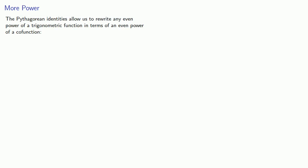The Pythagorean identities allow us to rewrite any even power of a trigonometric function in terms of an even power of a co-function.